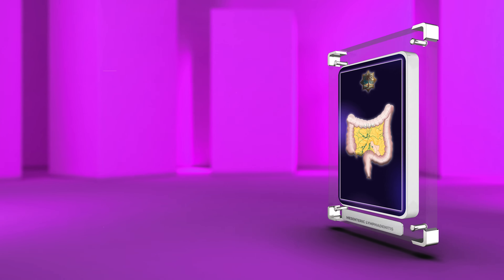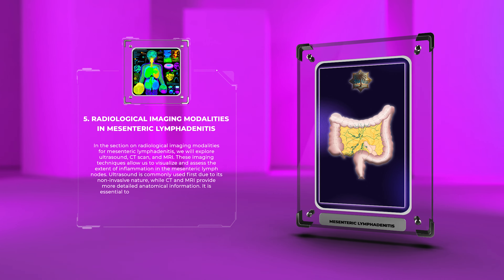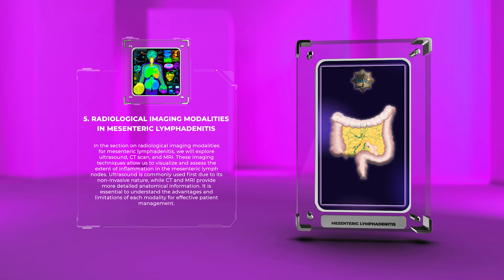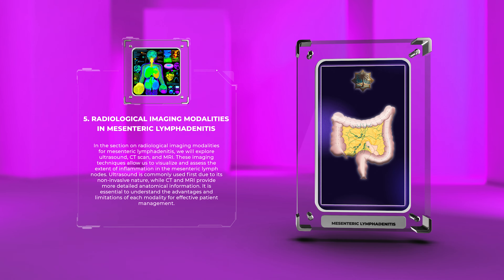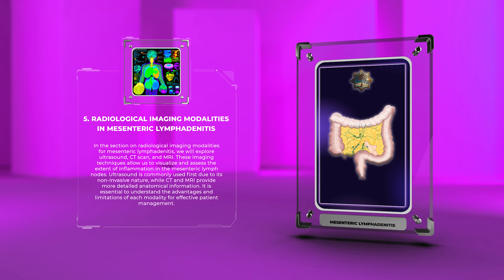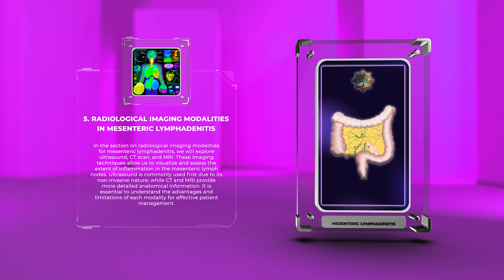In the section on radiological imaging modalities for mesenteric lymphadenitis, we will explore ultrasound, CT scan, and MRI. These imaging techniques allow us to visualize and assess the extent of inflammation in the mesenteric lymph nodes. Ultrasound is commonly used first due to its non-invasive nature, while CT and MRI provide more detailed anatomical information. It is essential to understand the advantages and limitations of each modality for effective patient management.